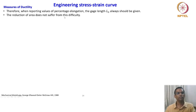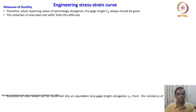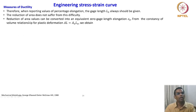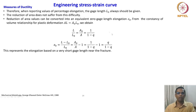Reduction in area does not suffer from this difficulty. So reduction in area is a better measure of ductility than percentage elongation because of this gauge length dependence. Reduction of area values can be converted into an equivalent zero gauge length elongation from the constancy of volume relationship for plastic deformation, that is A·L = A_naught·L_naught.